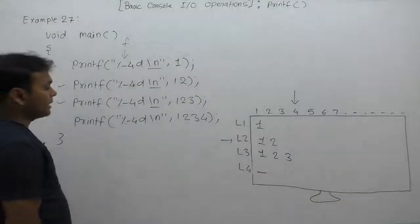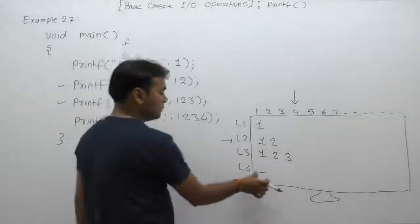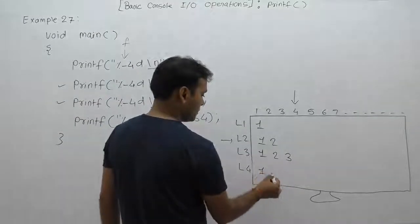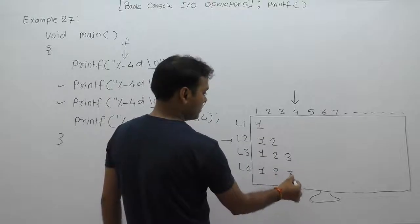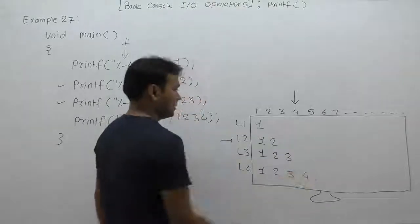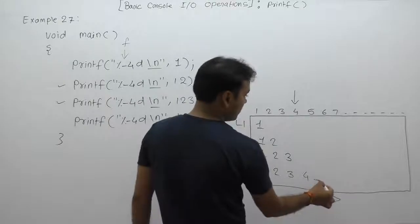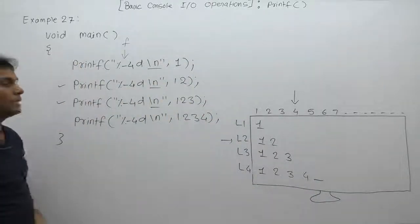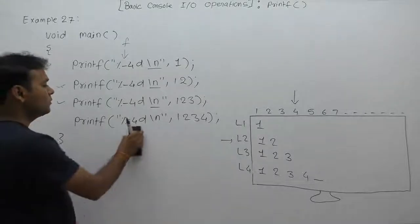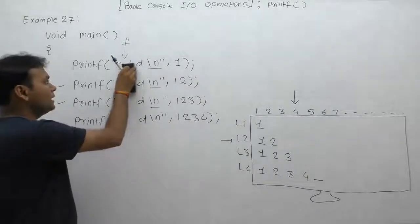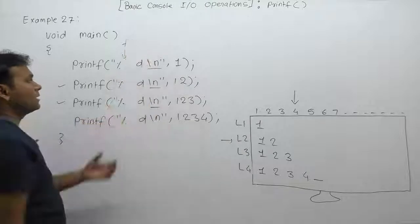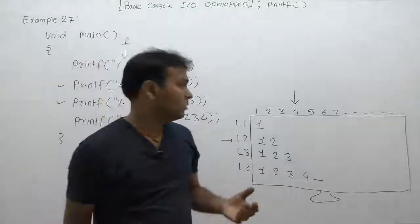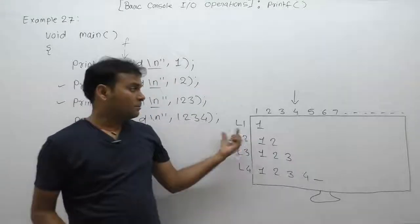In the last case, we are displaying the four-digit number 1234. It is displayed as 1-2-3-4 and the cursor will be on the fifth position. This is the final result of the given example. It is almost similar to using percent-d without any width, because in the default case the number is also displayed left-justified.